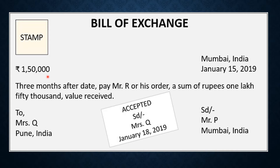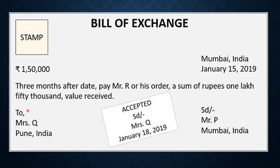3 months after date, pay Mr. R — here Mr. R is the payee — or his order. If Mr. R endorses the bill of exchange to some other person, the drawer has to pay to that particular person, that is the order of Mr. R. A sum of rupees 1,50,000, value received. Here, to Mrs. Q — she is the drawee. Mr. P is the drawer.